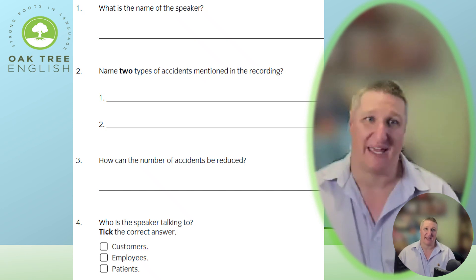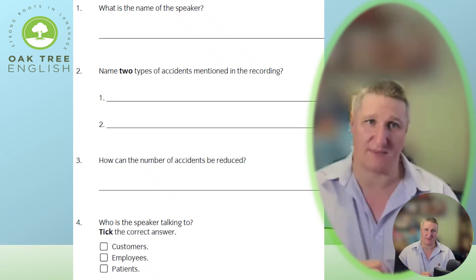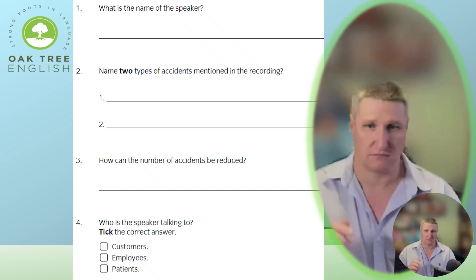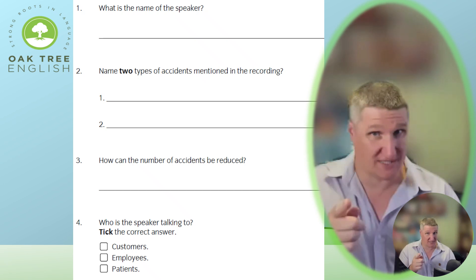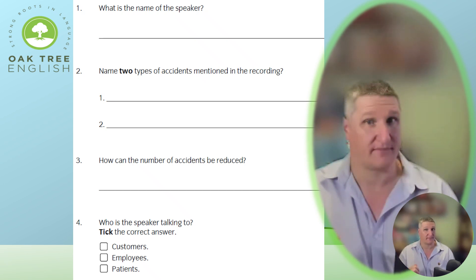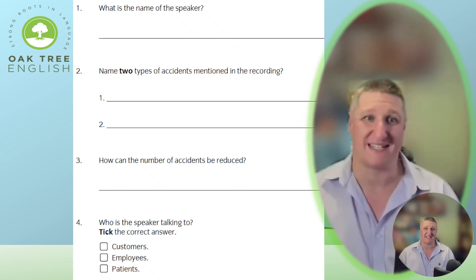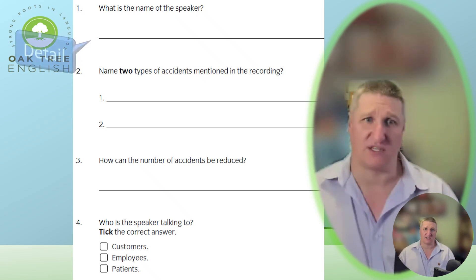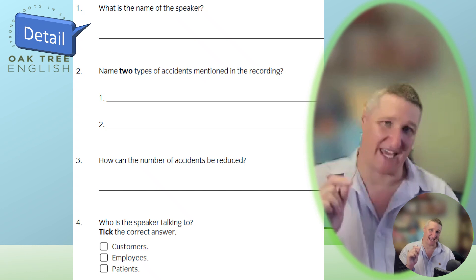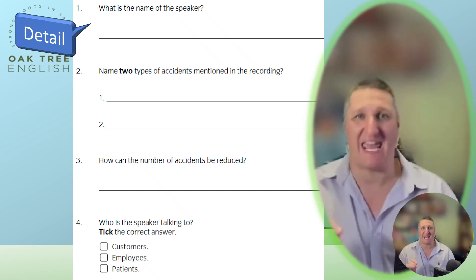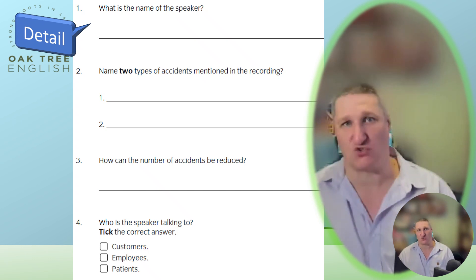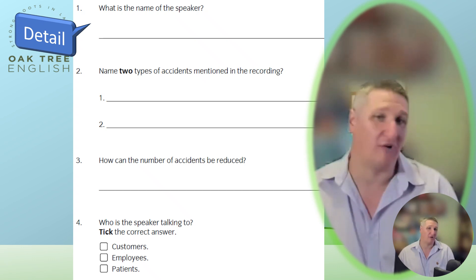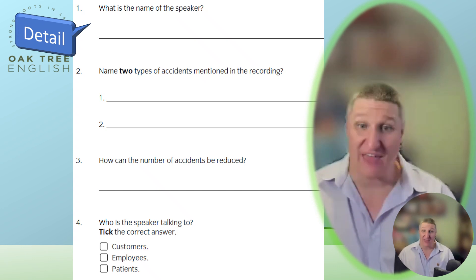Let's look at an example in the public domain from the City and Guilds website. I won't play the audio, so your teacher can still make use of the resource. Let's break down what we know about each of these questions. Number one is asking you to listen for a detail, specifically for the name of the person who was speaking. The answer will be a name, and that is all you have to write.